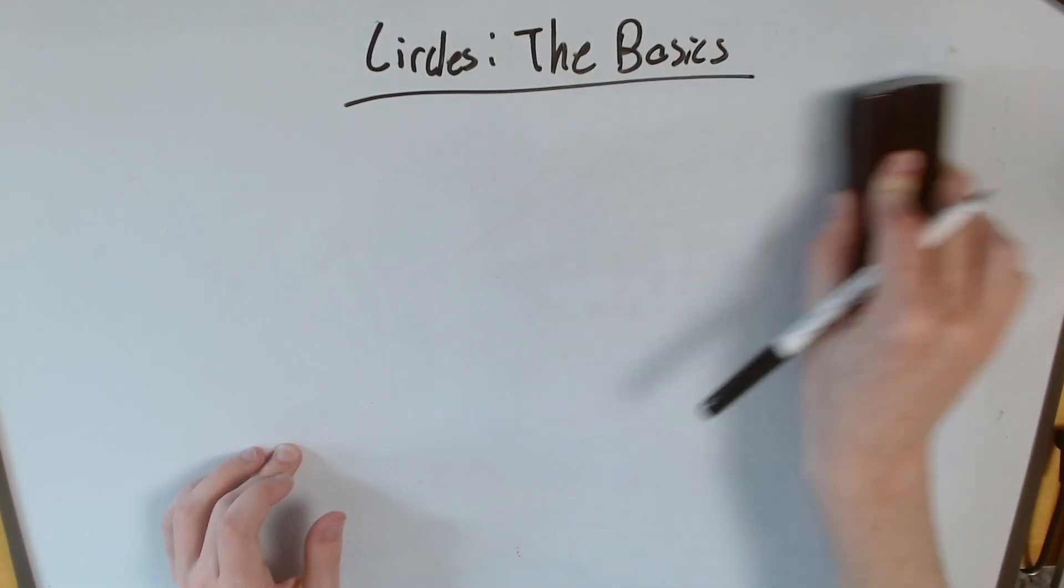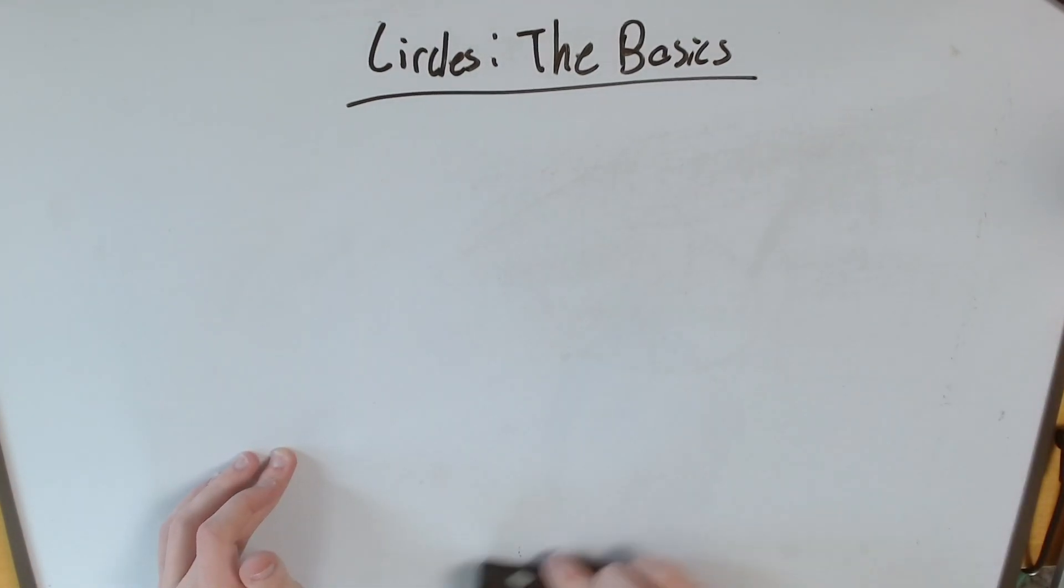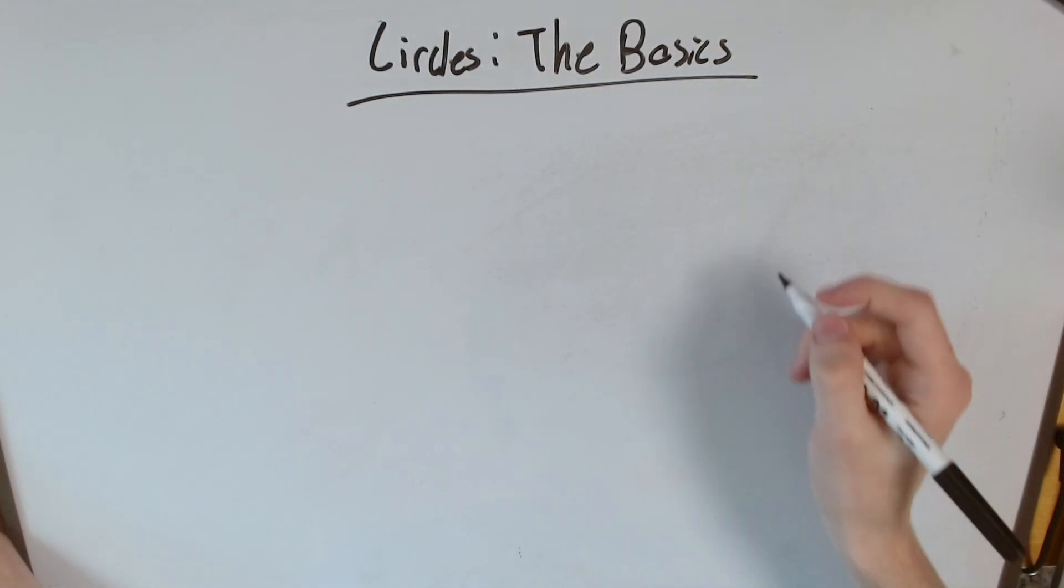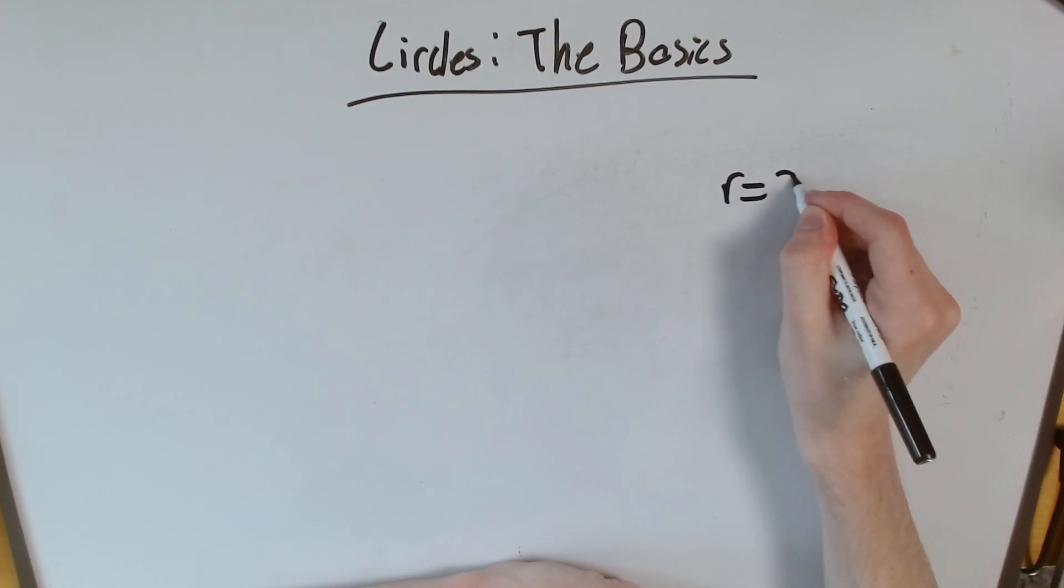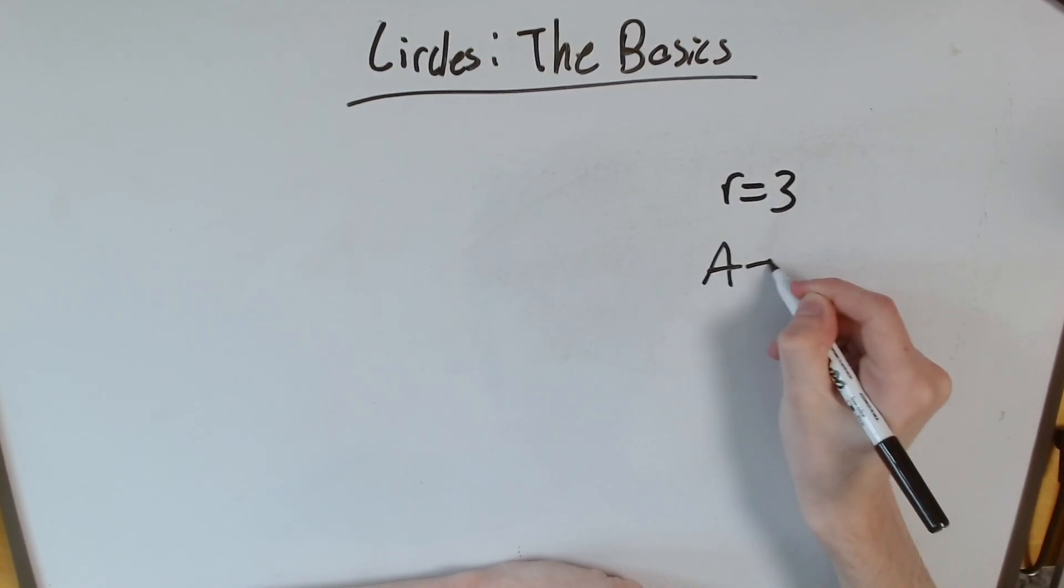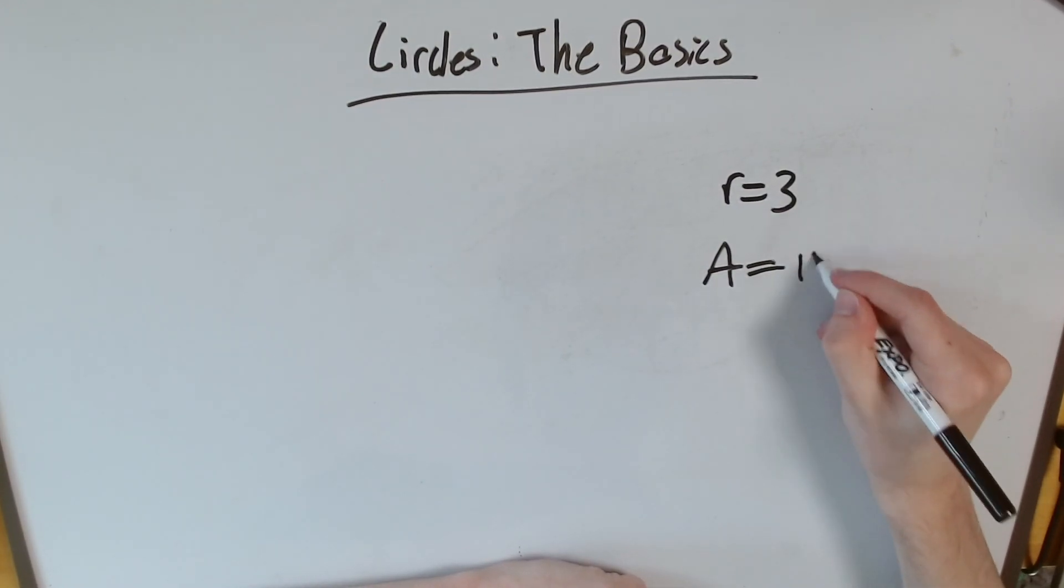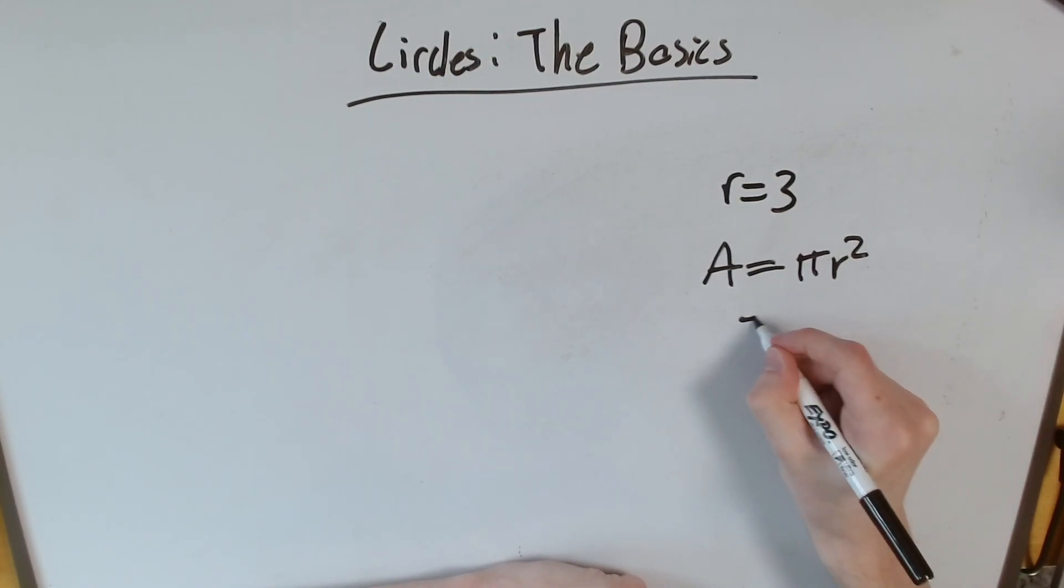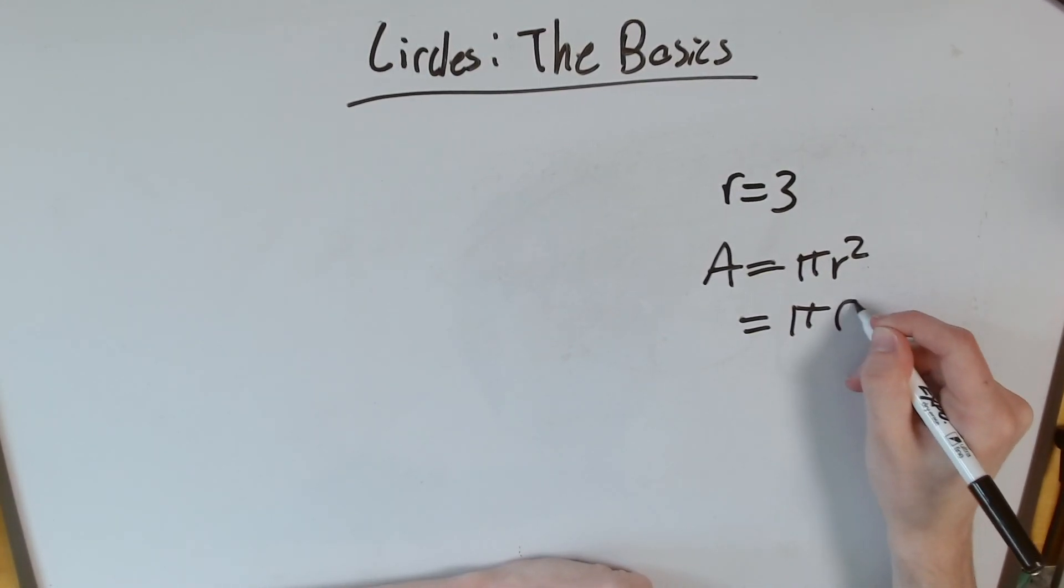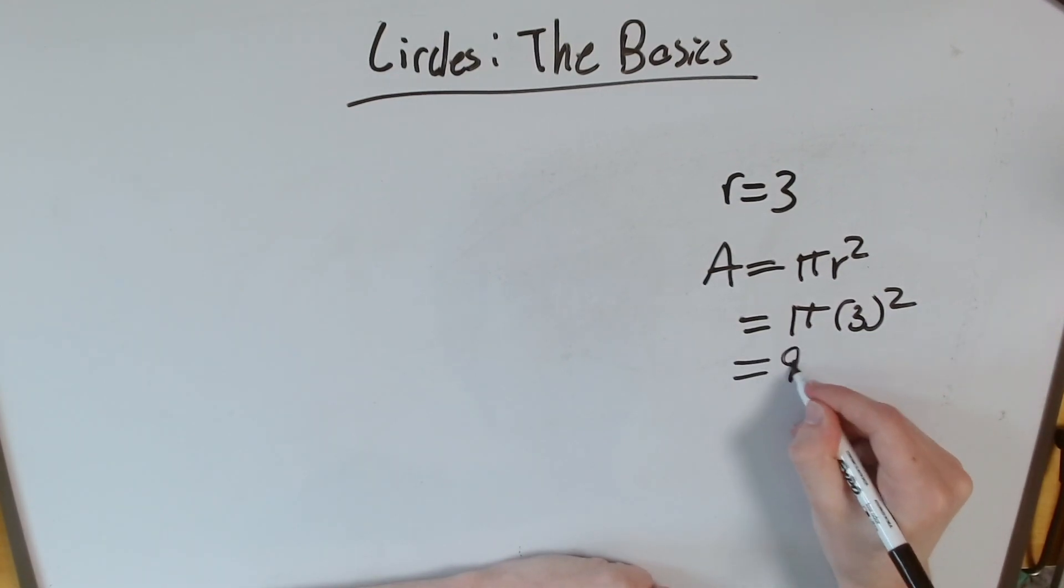Alright, so those are our basic formulas. So if you're solving a problem, they say find the area of the circle where the radius is three. I'm going to say, well, since the radius is three, pi r squared. So in my case, that's pi times three squared, so that's nine pi.